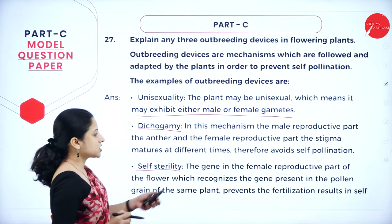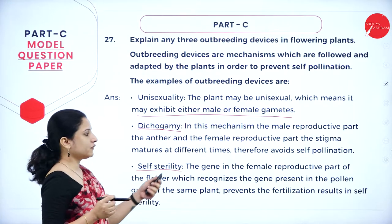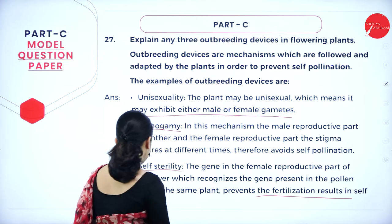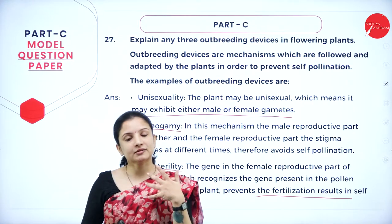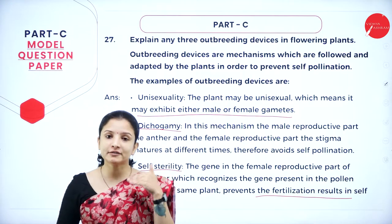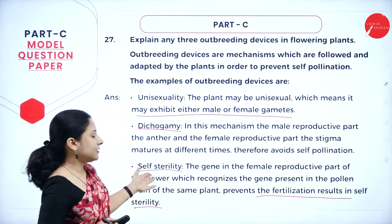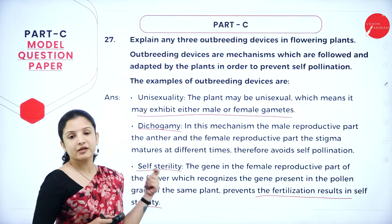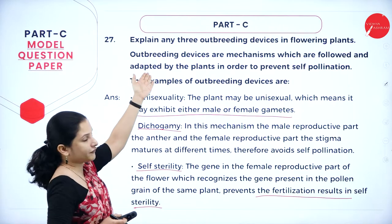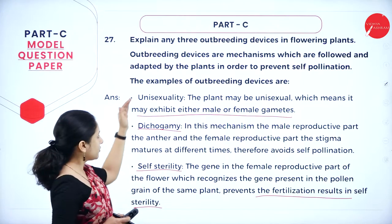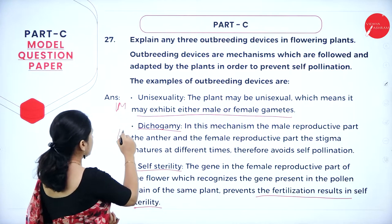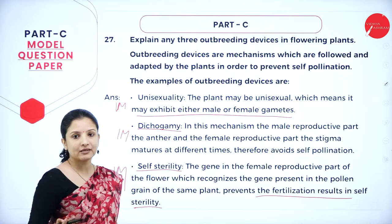The third device is self-sterility. The gene in the female reproductive part of the flower recognizes the gene present in the pollen grain of the same plant and prevents fertilization, resulting in self-sterility. In a bisexual plant, the plant itself will not allow its own pollen grains to fall on its stigma. Write about these three devices — each fetches one mark, for a total of three marks.